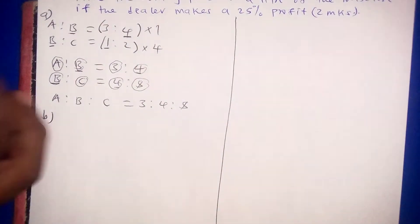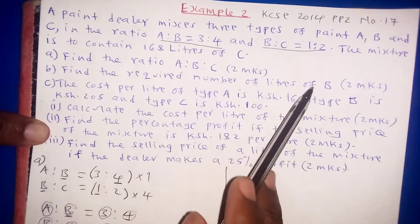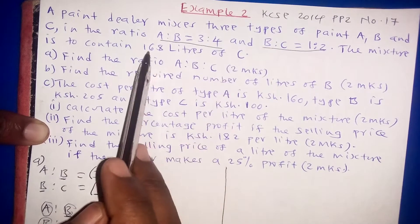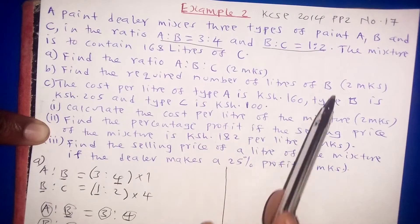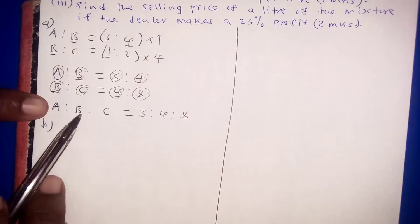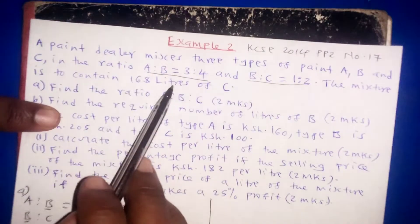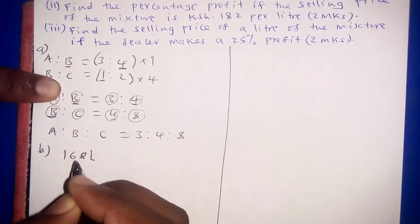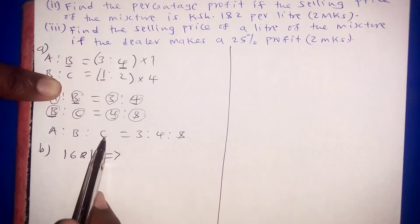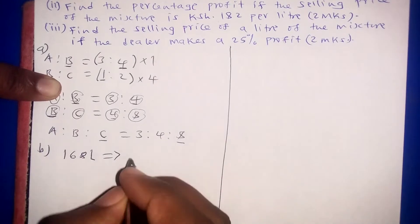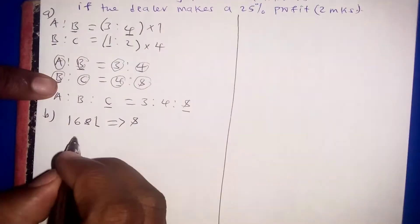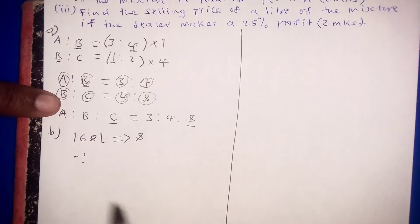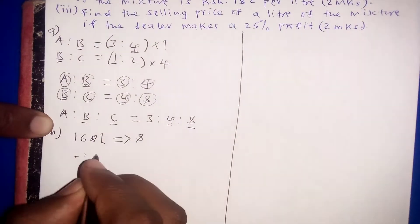For Part B, we need to find the required number of liters of B. We know that 168 liters represents C. From our ratio, C has a value of 8, so 168 liters is equivalent to a ratio of 8. The ratio of B is 4, so we need to find what 4 represents in liters.